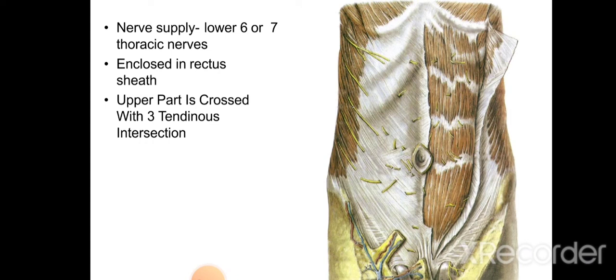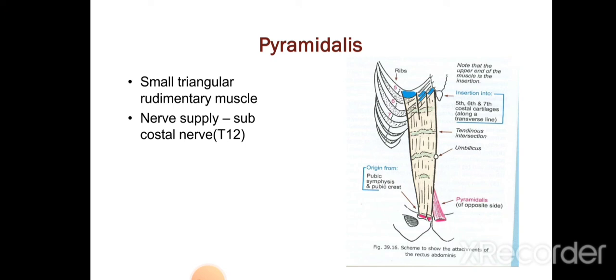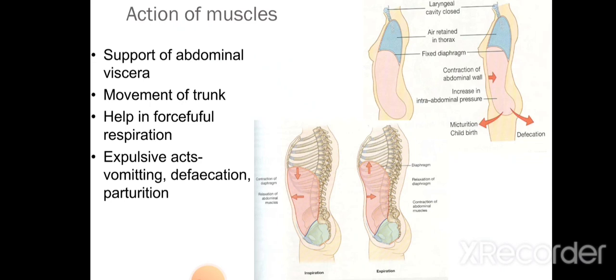The rectus abdominis is supplied by the lower six intercostal nerves. The pyramidalis muscle is a small triangular rudimentary muscle arising from the pubic crest and inserted into the linea alba; it is supplied by the subcostal nerve (12th thoracic nerve). The actions of these muscles include supporting the abdominal viscera, movement of the trunk, forceful respiration, and expulsive acts like vomiting, defecation, and parturition. This completes the topic of the muscles of the anterior abdominal wall.